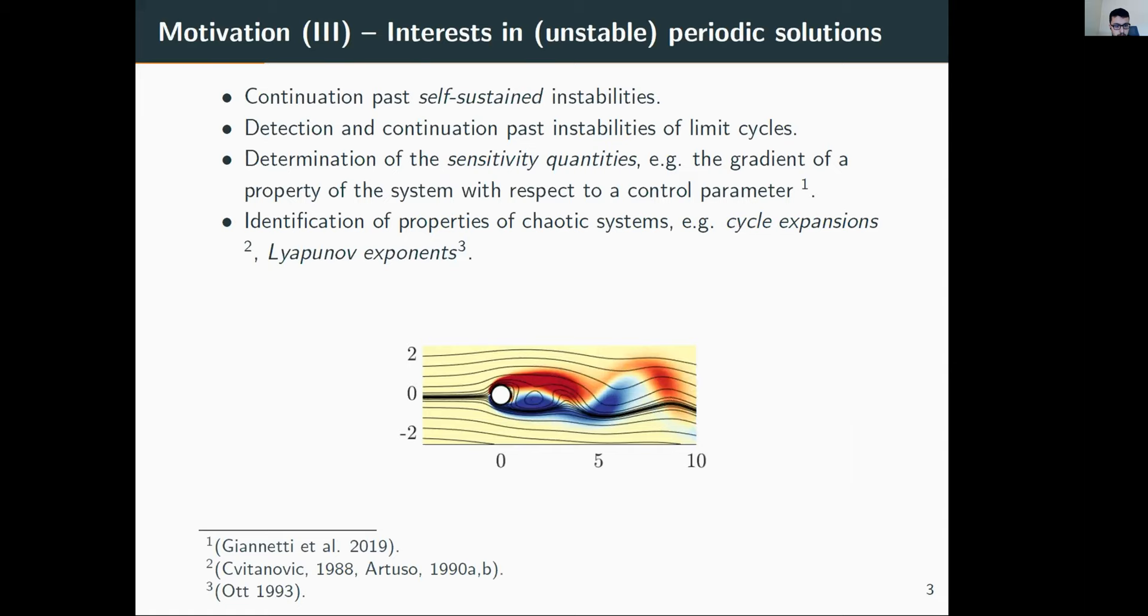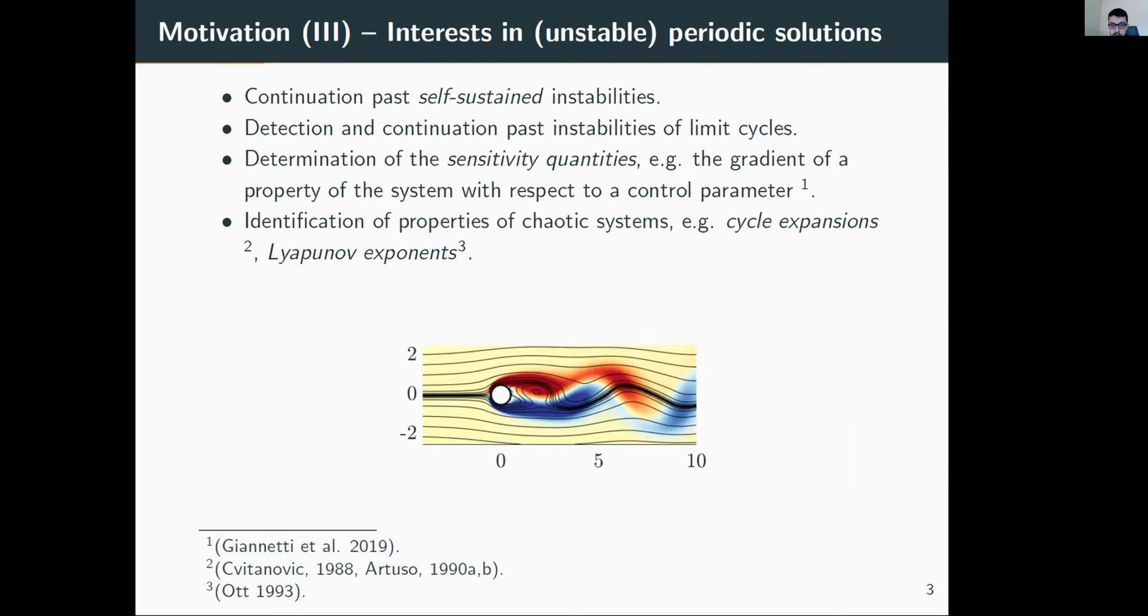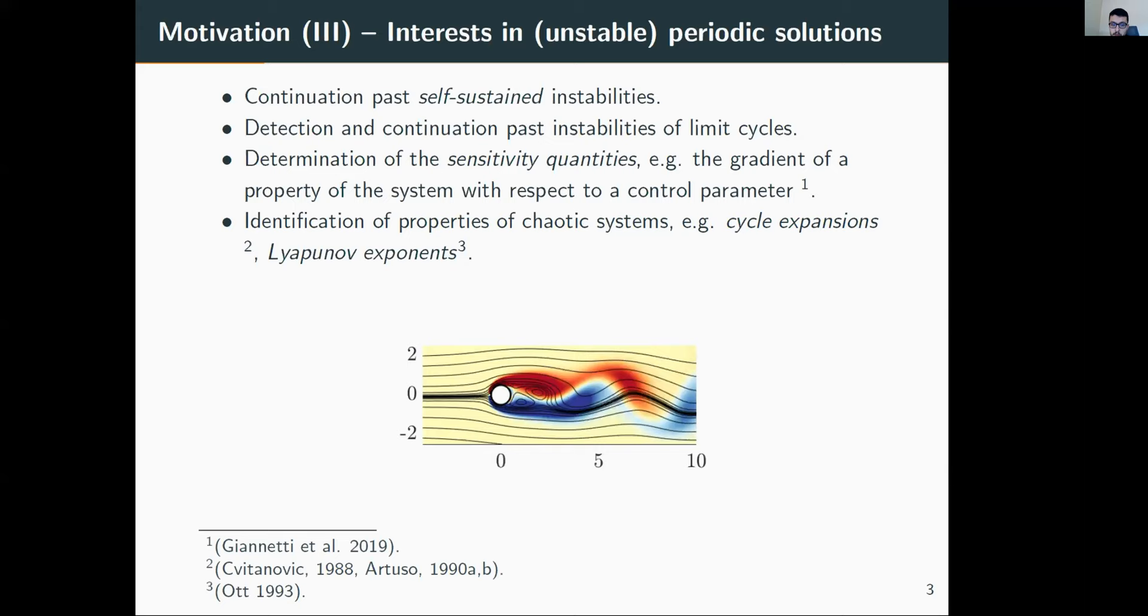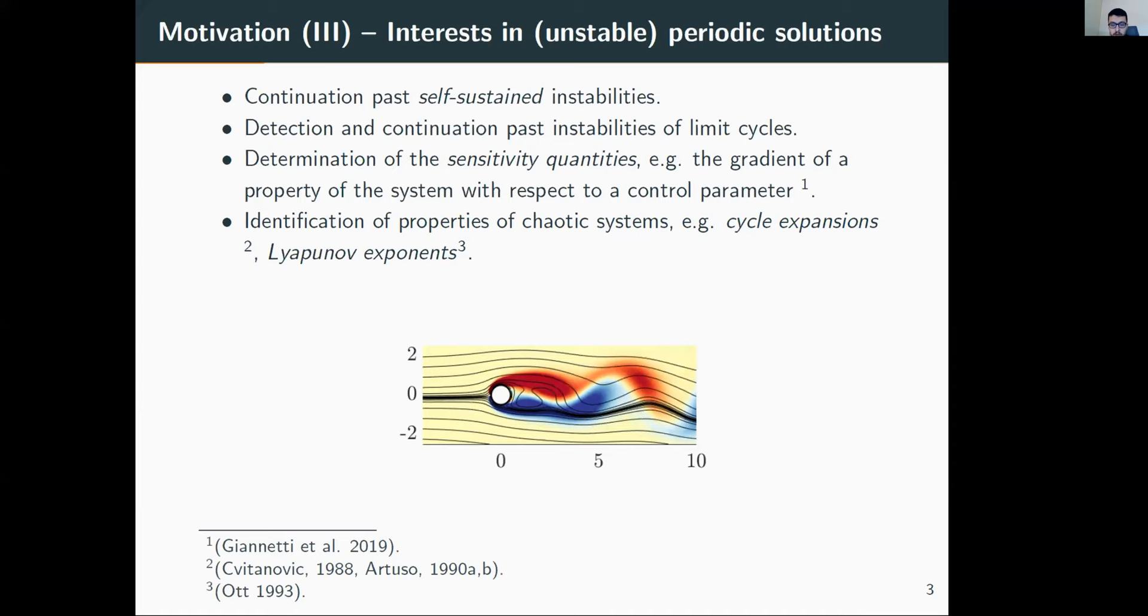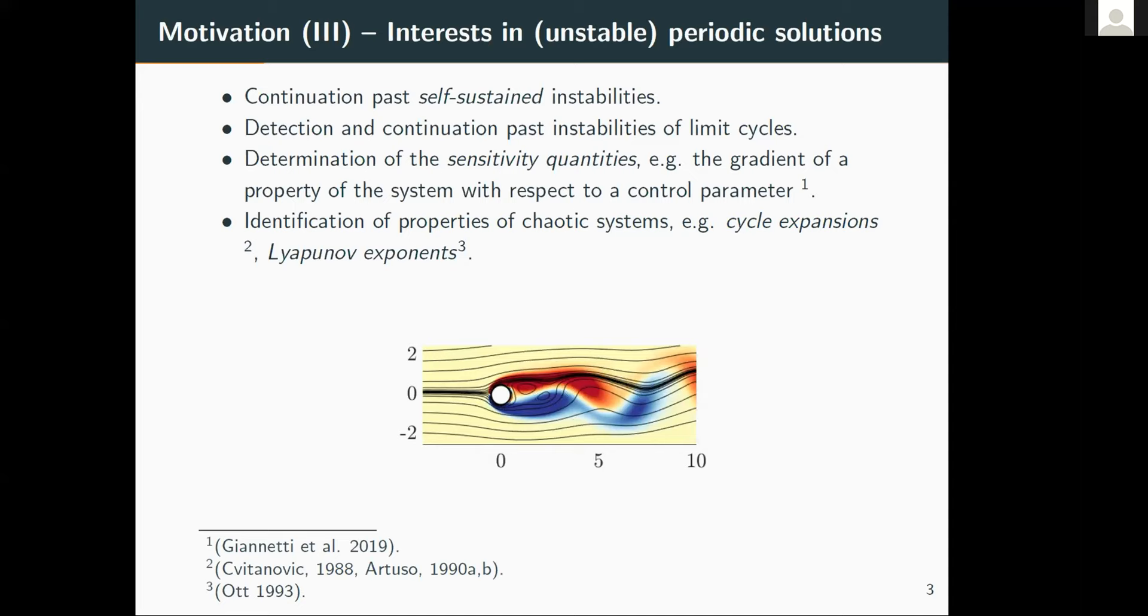Periodic orbits are important because they are the natural continuation of primary instabilities, which are of interest to the hydrodynamic community and in other fields of physics like quantum chaos. In addition, unstable periodic orbits can provide information about how to control the system via sensitivity quantities, which we can distinguish into two parts: the well-behaved laminar sensitivity and the chaotic sensitivity computed by sample expansion techniques.